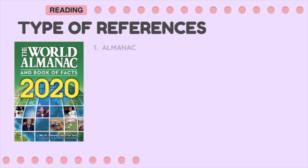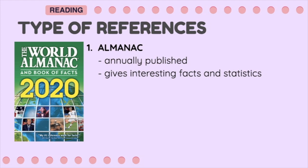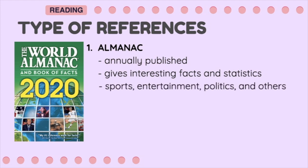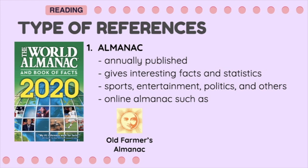The first type of general reference is the Almanac. Almanacs are annually published to give interesting facts and statistics about various fields like sports, entertainment, politics, and many others. This print reference is now also published online. We can browse the Old Farmer's Almanac online, which includes topics such as tide tables, sunrise times, weather forecasts, and more. Another online almanac is Fact Monster.